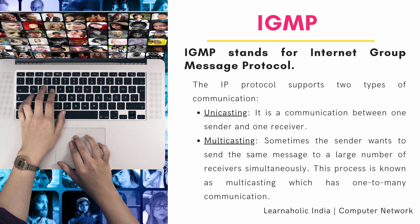IGMP stands for Internet Group Message Protocol. The IP protocol supports two types of communication. First is Unicasting — it is a communication between one sender and one receiver, therefore we can say that it is one-to-one communication. Second is Multicasting — sometimes the sender wants to send the same message to a large number of receivers simultaneously. This process is known as Multicasting, which has one-to-many communication.